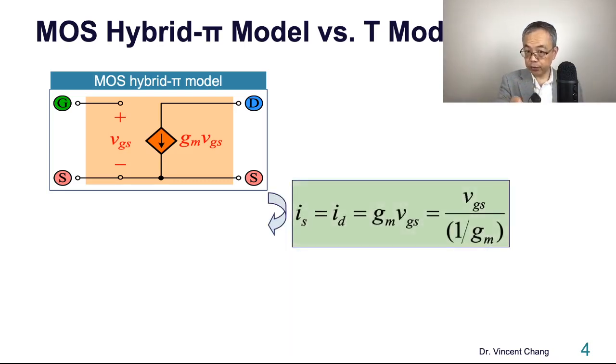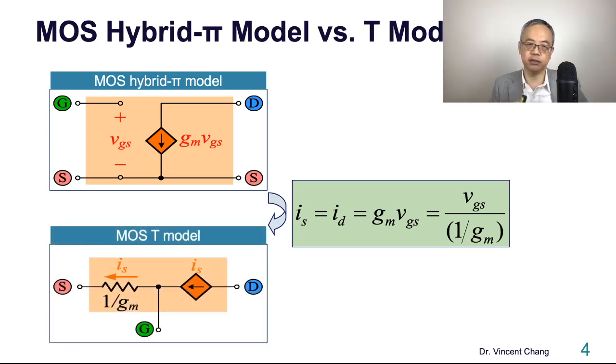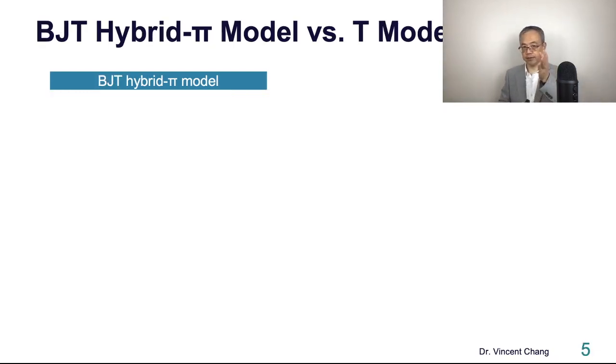By doing this, we can move the hybrid pi model into another equivalent model called T equivalent circuit model. These models highlight the importance of 1 over gm, which is the resistance between gate and source looking into source. This model also tells us not just voltage control current source on the top, but current control current source.